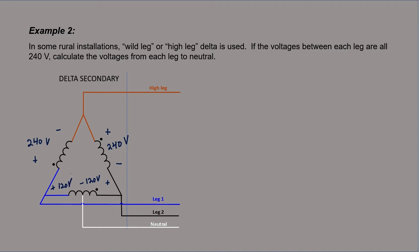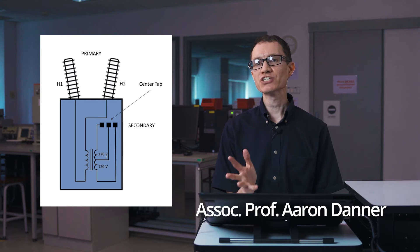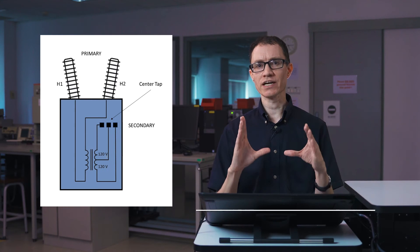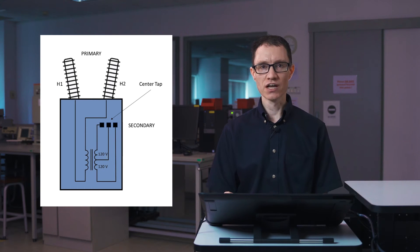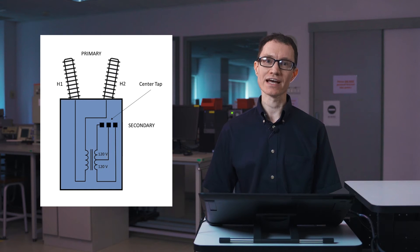If I were to use a voltmeter and measure these voltages, this is what I would read. I hope you can appreciate here that it's possible to create such a wild leg delta configuration using transformers like this that have a center tap.